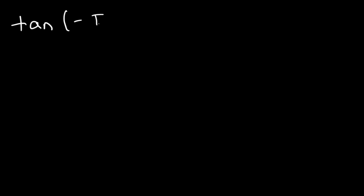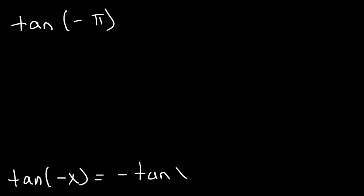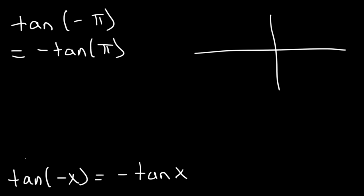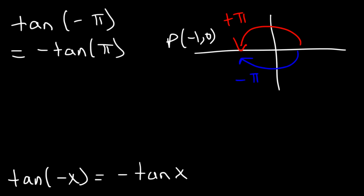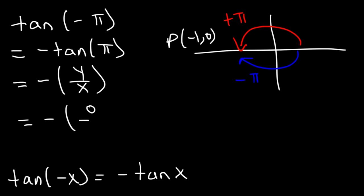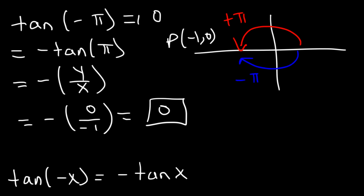Let's try one last problem: find the value of tangent of negative π. Tangent is an odd function, so tangent of negative π is negative tangent of positive π. It turns out that positive π and negative π lead to the same point: (−1, 0). Tangent is y over x, and y is 0 while x is −1. Since the numerator is 0, the whole expression equals 0. So tangent of negative π, or equivalently negative tangent of π, is just 0.